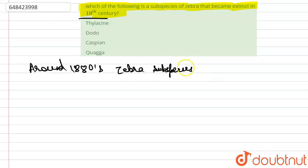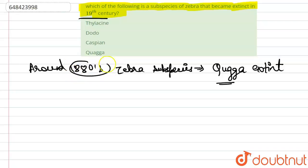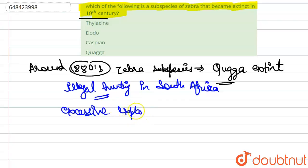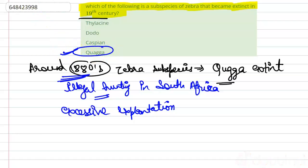...that is quagga, became extinct in the 1880s because of illegal hunting in South Africa. Due to illegal hunting and excessive exploitation, it went extinct around the 1880s. So option D is the correct answer.